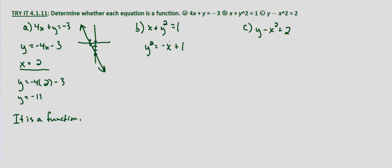When we take the square root of both sides, we end up with y equals plus or minus. Remember, when we take a square root, negative 2 squared is 4 and 2 squared is also 4, so we have to look at both the negative and positive square root. That indicates that no matter what we put in for x, as long as it's defined, we're going to end up with two values — a positive value and a negative value — which indicates this is not going to be a function.